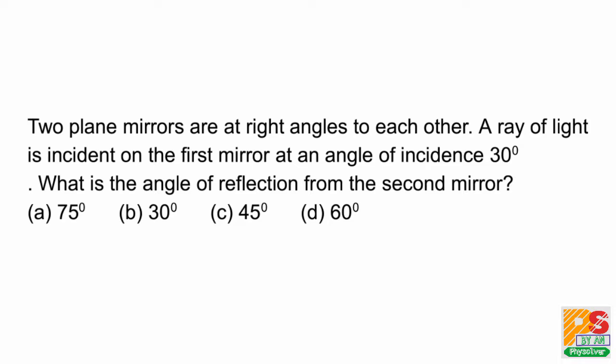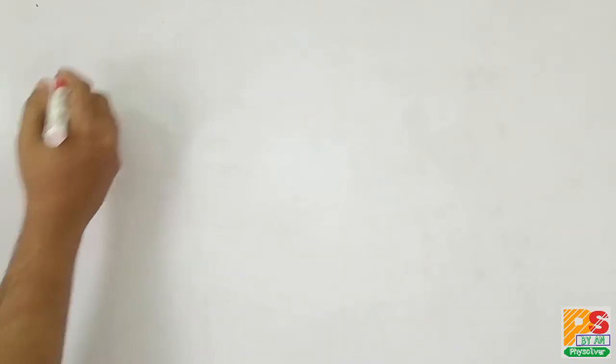Options are given. Now this is a very simple problem. Two plane mirrors are inclined at 90 degrees, so let's draw them first.